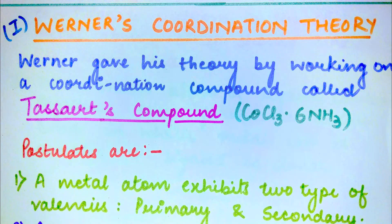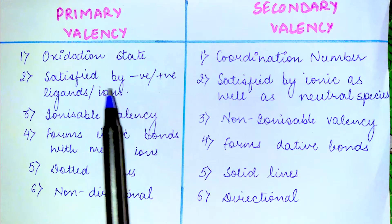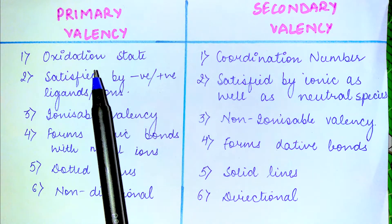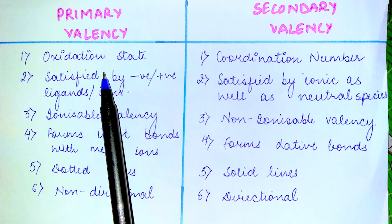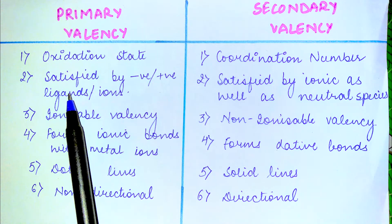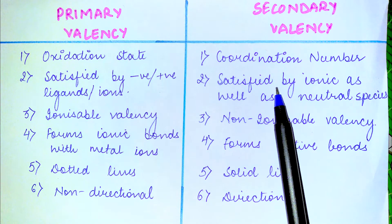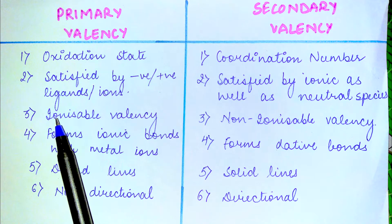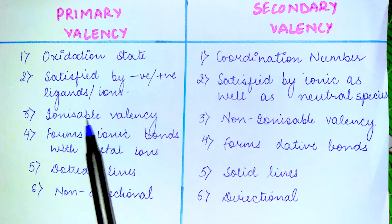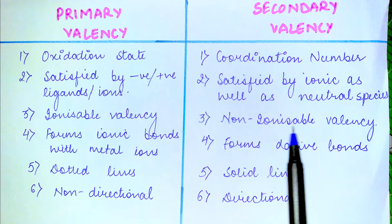Let us see what we mean by primary and secondary valency. This question is very important from a competition point of view. The primary valency is also called oxidation state, while the secondary valency is called coordination number. Primary valency is satisfied by negative or positive ions, whereas secondary valency is satisfied by ionic species as well as neutral molecules. Primary valency is a part of the ionization sphere and hence it is called ionizable valency, while secondary valency is a part of the coordination sphere and is called non-ionizable valency.